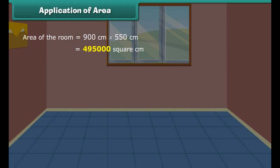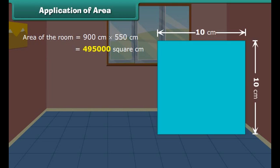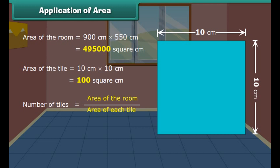Alternatively, perimeter is equal to twice the sum of the lengths and widths. This is a room of length 900 cm and width 550 cm. Rohan wants to change the tiles of the floor. Now, if each side of the new tile is 10 cm, then how many tiles will be needed? Let us find the area of the room first.